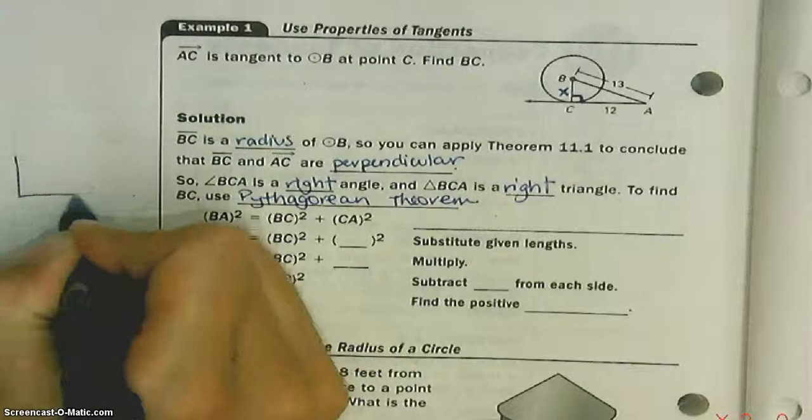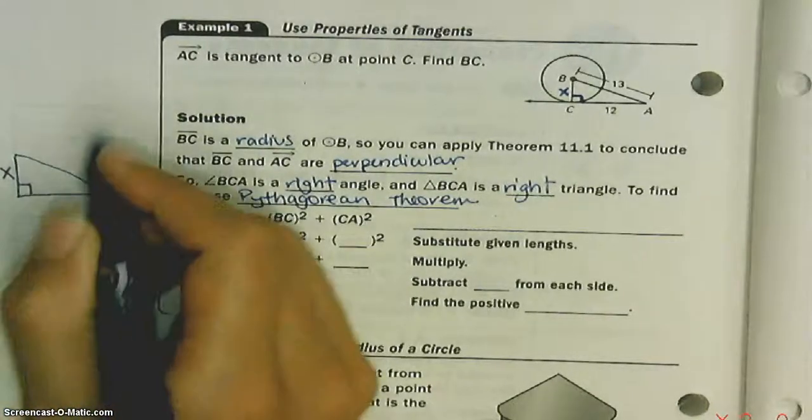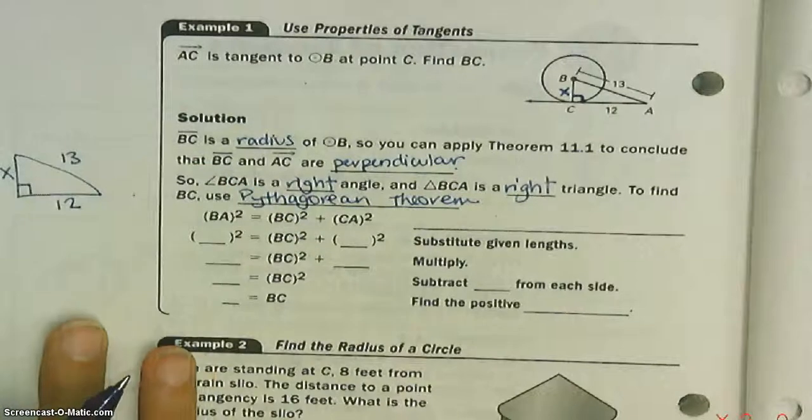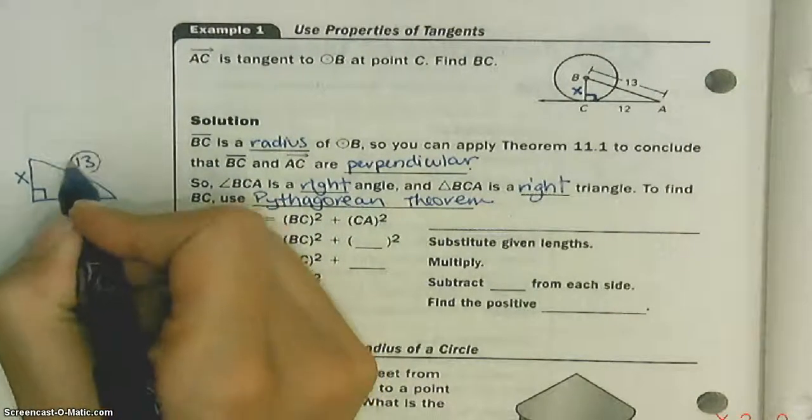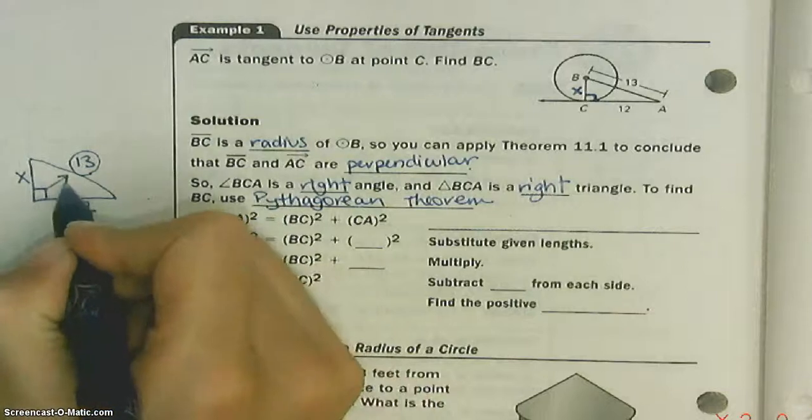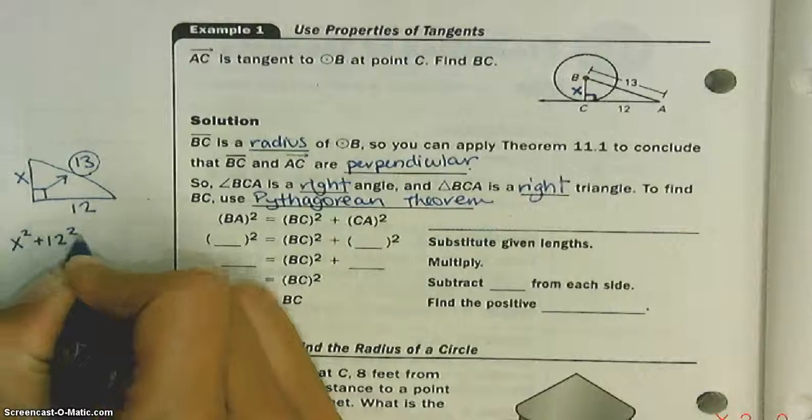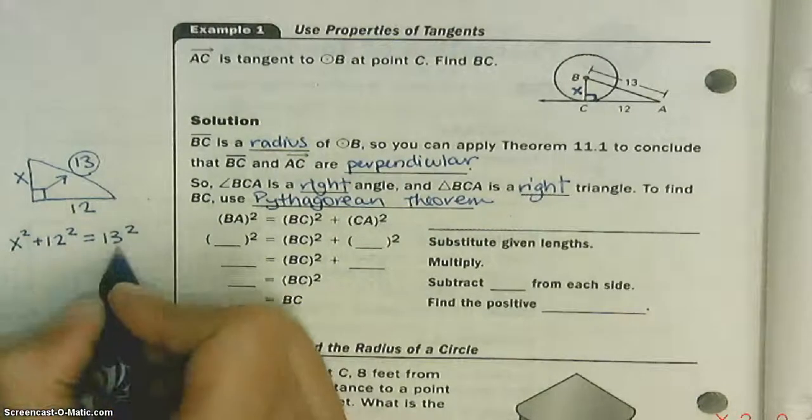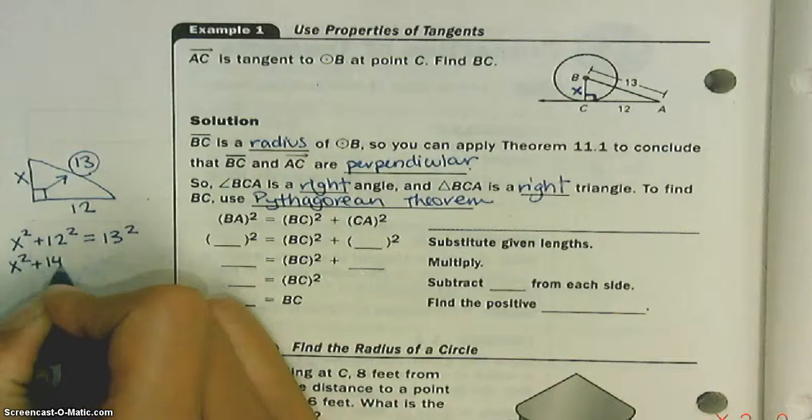Here's what our triangle looks like. I'm going to redraw it over here so we can get a good visual. We've got X, we've got a right angle, 12, and 13. I want to find X. This is my C value, right? It's across from the right angle. I'm going to do A squared plus B squared equals C squared. C always goes over here by itself.